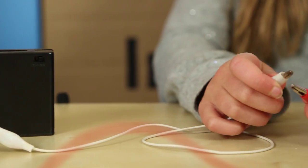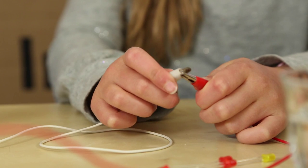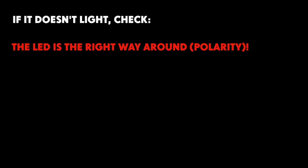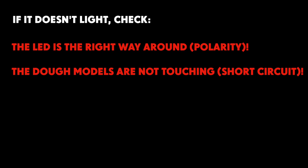Test the circuit by touching two loose crocodile clips together. The LED should light. If it doesn't light, check the LED is the right way around, that the dough models are not touching and that the battery pack is turned on.